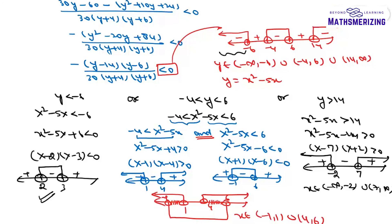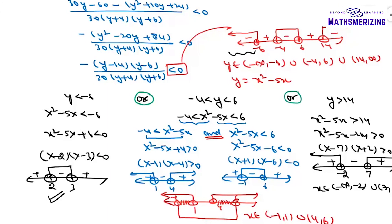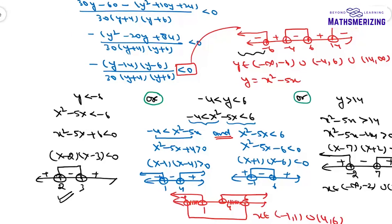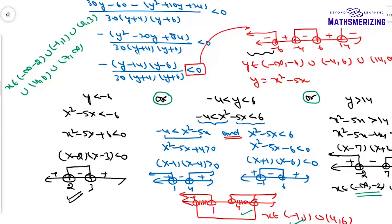Now combining all three cases — since the condition between cases is OR, we take the union. The final answer is x belongs to (-∞, -2) ∪ (-1, 1) ∪ (2, 3) ∪ (4, 6) ∪ (7, ∞). This is how we solve these questions.